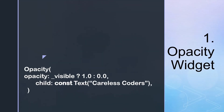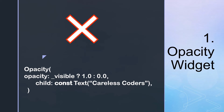Usage of Opacity widgets: Opacity widgets trigger the same layer, so you should avoid using them. Instead, you could use hexadecimal color codes to give the same effect. Animating an Opacity widget makes it even worse because it causes the widget to rebuild each frame.